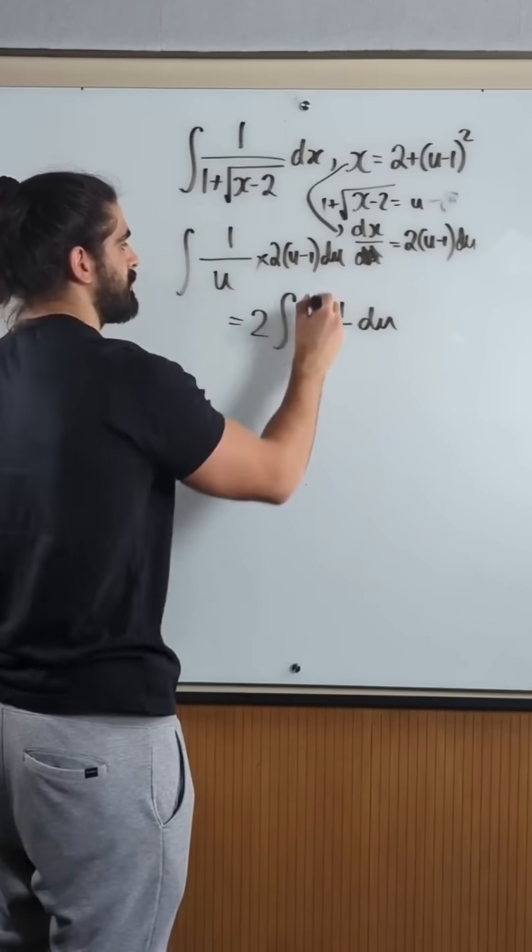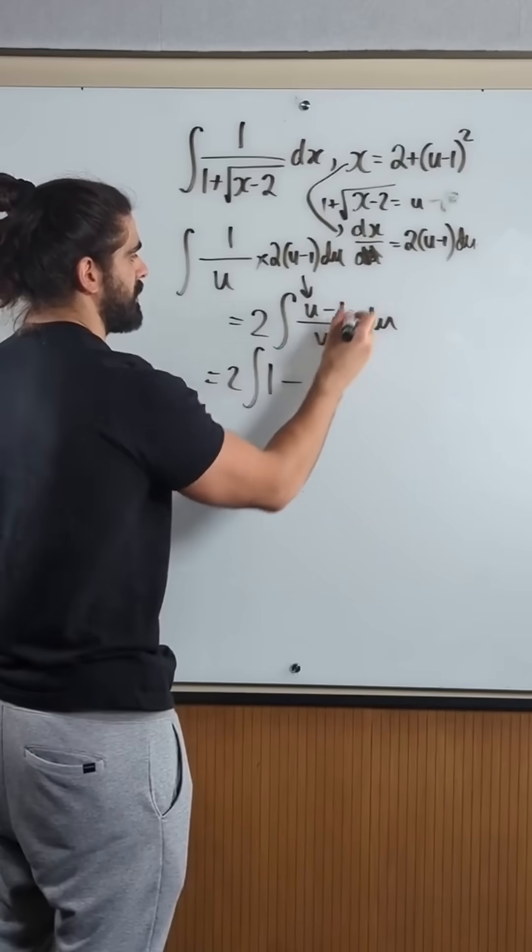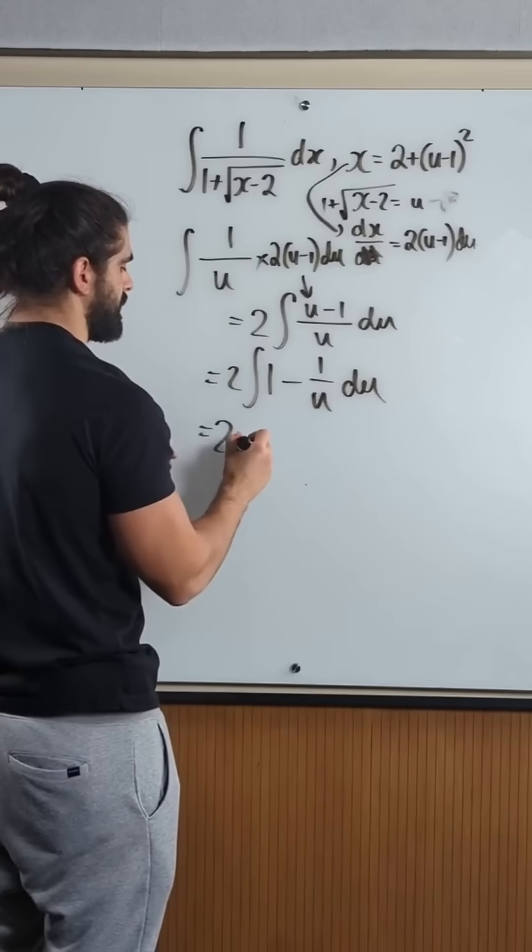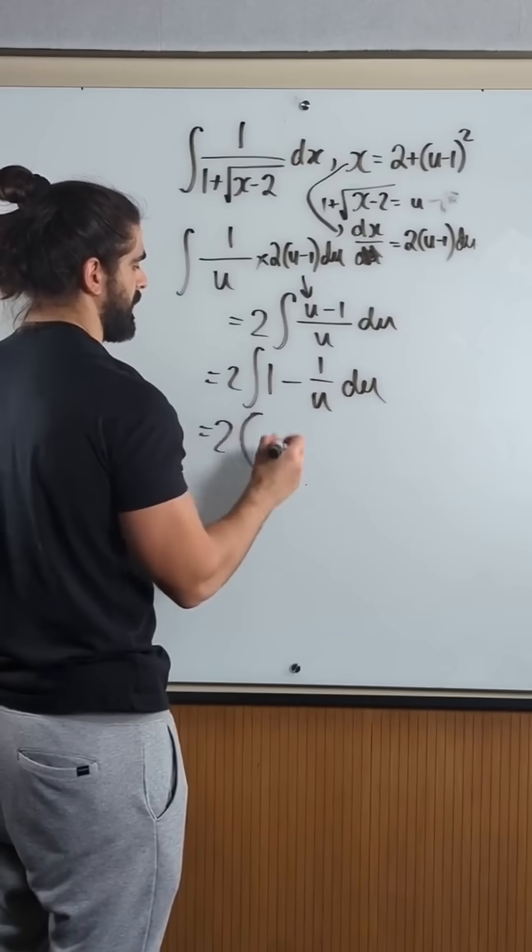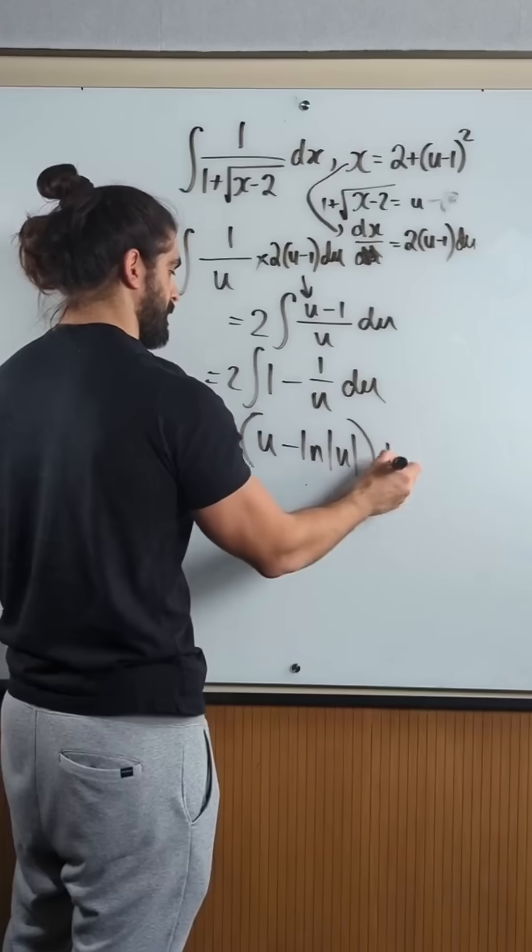How do we integrate this? You need to split the fraction, u divided by u is 1 minus 1 over u du. Now it's super easy, so we have u minus ln(u) plus c.